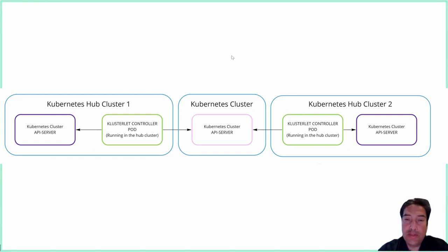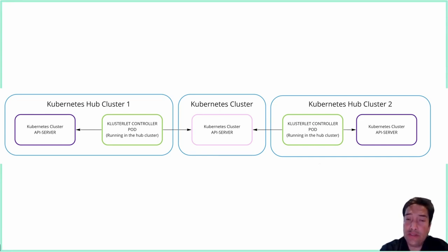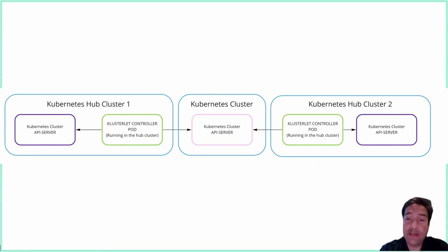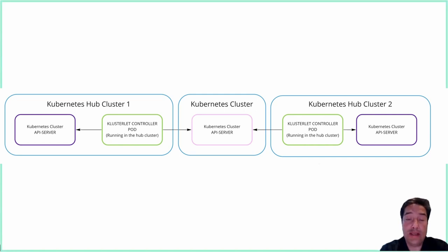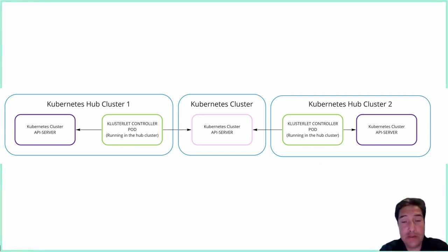One last use case for hosted mode is to support multiple hubs. You can have more than one hub running its clusterlet for a managed cluster in hosted mode, and those clusterlets running on two or three individual hubs can all point to the same managed cluster. You need to impart role bindings and role definitions to keep the clusterlet agents from stepping on one another, but if they're all running at the same version, the CRDs applied to the managed cluster will work, and each of those agents will be able to apply work or add-on pieces to the same managed clusters from different hubs.